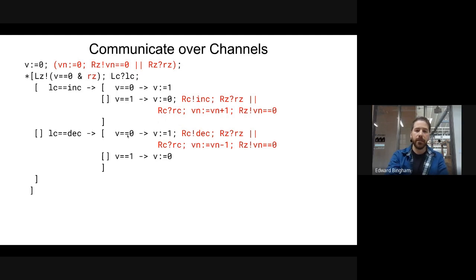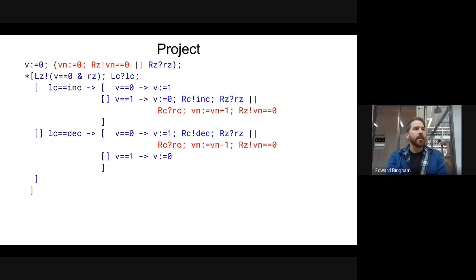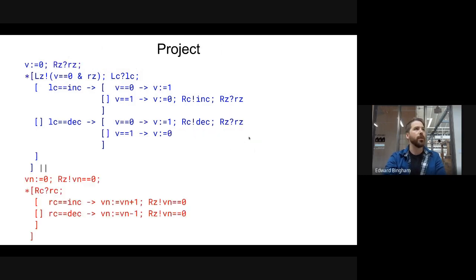For decrement when V is zero: set V to one, send a decrement down RZ, wait for RZ; in parallel, wait for the command on RZ, decrement Vn, and send the current status of Vn down RZ. The next step is to separate out the two processes. All of the things belonging to the LSB are in blue and all of the things belonging to the remaining bits are in red. We can use projection to just split these apart into separate processes.